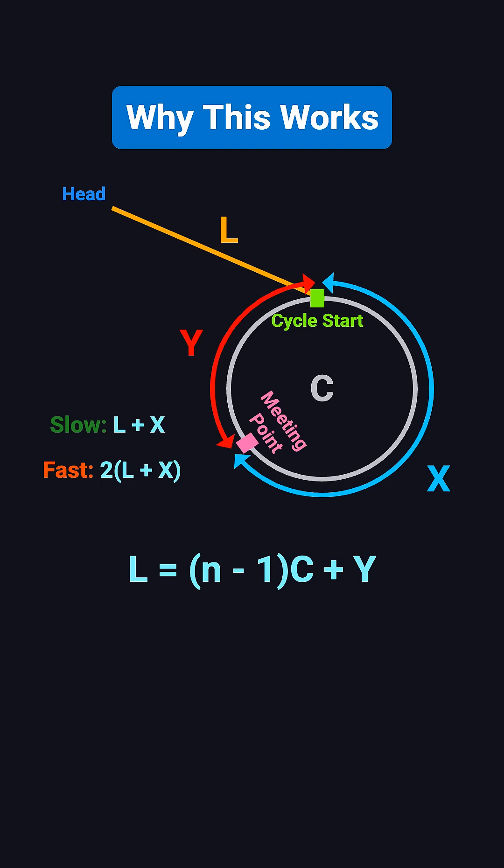This means that if one pointer starts from the head, and the other starts from the meeting point, and they both move one step at a time, then after the first pointer walks L steps, and the second pointer walks (n - 1) times around the cycle plus Y steps, they will meet exactly at the start of the cycle.